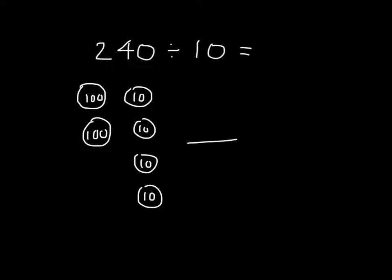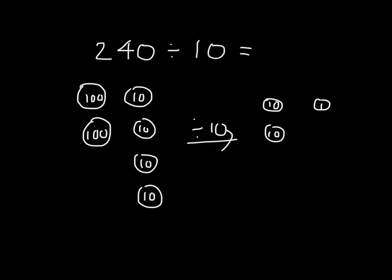When we divide by 10, let's think about what happens to each of these unit disks. When 100 is divided by 10, we get 10. So for this one here, if we divided it by 10, we would get 10, and the same thing happens with the other hundreds unit disks. When we divide 10 by 10, we get 1. And how many times would we do that? Once, twice, 3 times, 4 times. So we finish modeling what we have here.